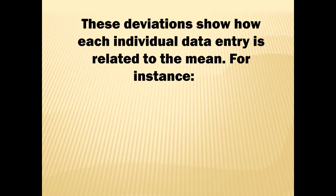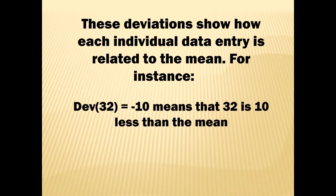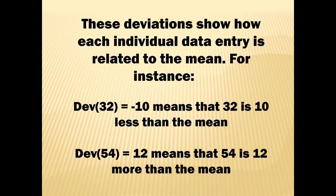These deviations show how each individual data entry relates to the mean. For instance, the deviation of 32 equals negative 10, meaning 32 is 10 units less than the mean of 42. The deviation for 54 is positive 12, meaning 54 is 12 more than the mean. When you see negative deviations, the data values are less than the mean; when you see positive deviations, the data values are greater than the mean.